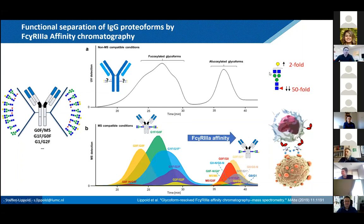So indeed, fucose is the major factor. If present, it prohibits the interaction with the receptor and reduces affinity by a factor of 50.